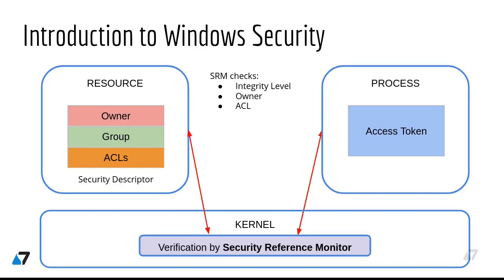There are a few integrity levels in Windows: low, medium, high, and system. Usually users run at medium integrity level, and when they need to do some administrative work — like install software on the system — they have to be elevated to high integrity level. System services receive system integrity.